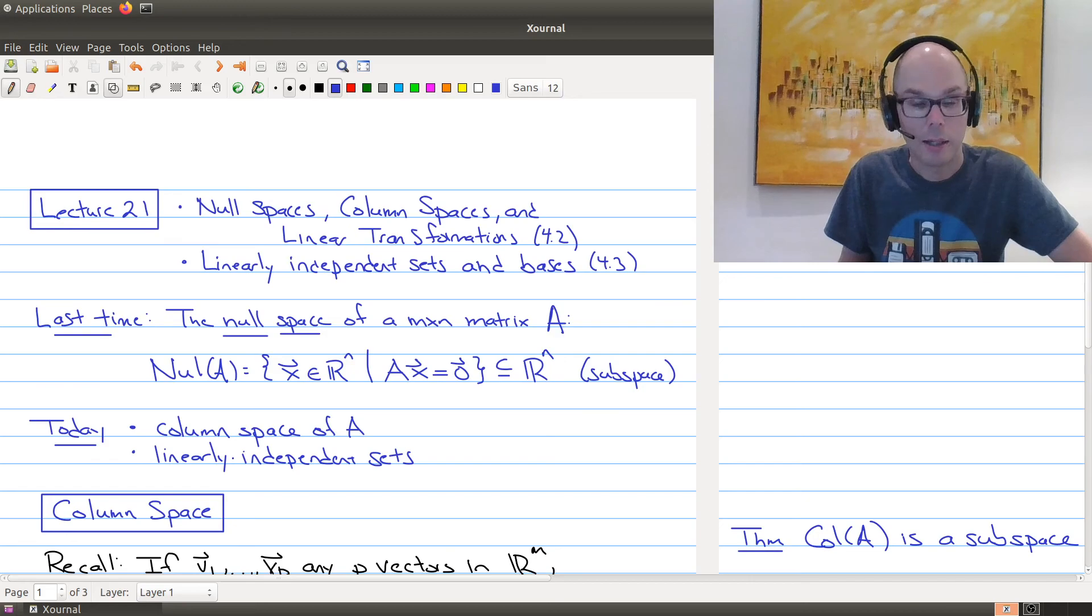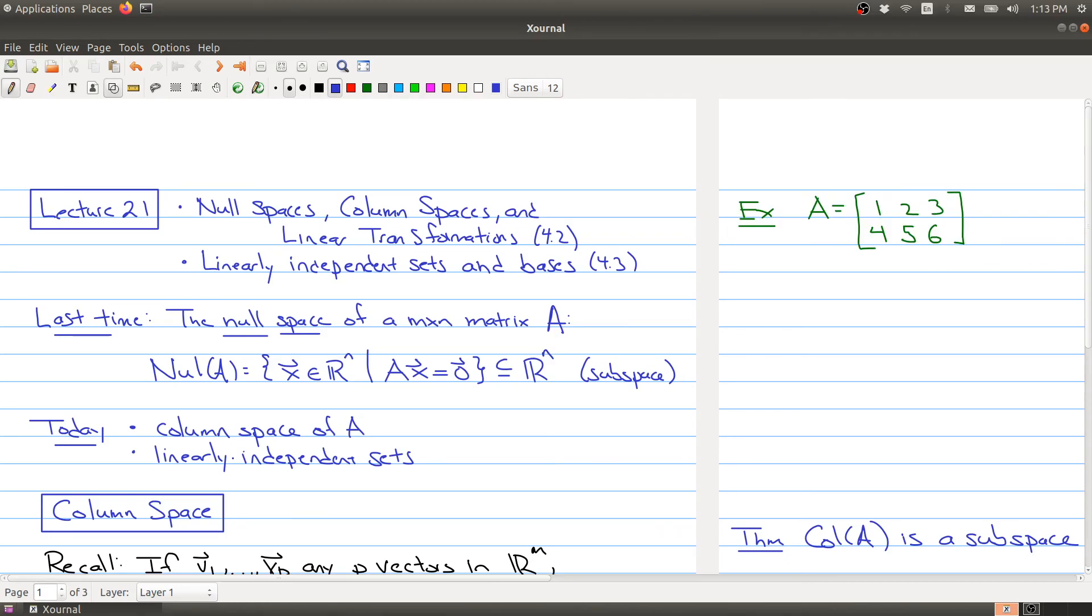Now our goal today is to introduce another subspace that you can get from a matrix. So the null space is one. We'll define another one, which is called the column space. And then the other thing that we're going to be focusing on today is what linearly independent sets are in an arbitrary vector space.